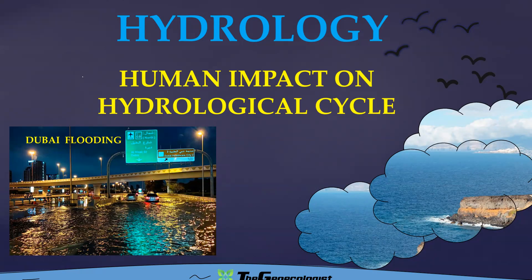Let's observe the human impact on the hydrological cycle. One important thing to understand here is that humans and the hydrological cycle have a two-way relationship. If we impact the hydrological cycle, in turn it will have an impact on our development. The Dubai flooding of recent times is one of the best examples of what has happened, and we'll be talking about that as well at the end of this video.